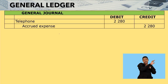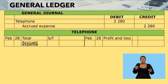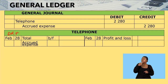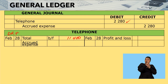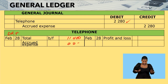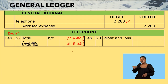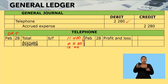When you have completed the general journal, it should make it easy to complete your general ledger. The first account is telephone — remember, it is an expense and increases on the debit side. My total brought forward from the trial balance is $11,400. From the general journal, I debited telephone with $2,280 via accrued expense. Adding these two amounts gives $13,680.